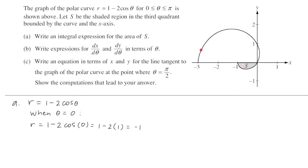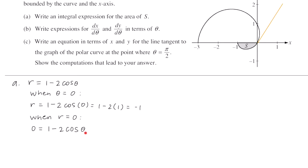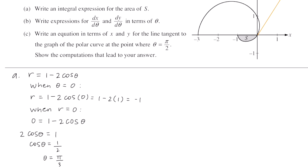The curve is drawn from 0 to pi. We start at theta equals 0 where the point is at r equals negative 1. As we rotate the angle up, since the curve is down in the third quadrant, the r values continue to be negative. We want to find the angle at which the curve returns to a length of 0, so we set r equal to 0 and solve: 0 equals 1 minus 2 cosine theta, giving cosine theta equals 1/2, so theta equals pi over 3.